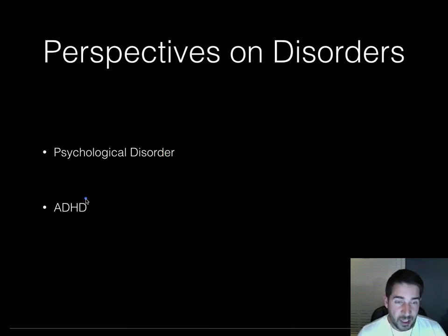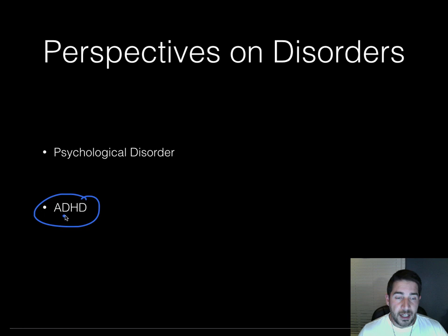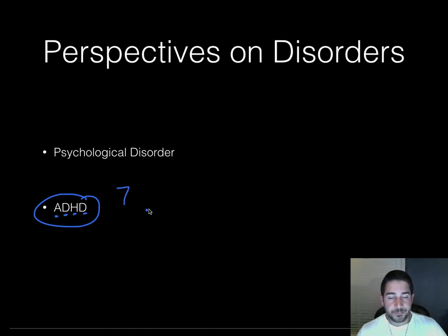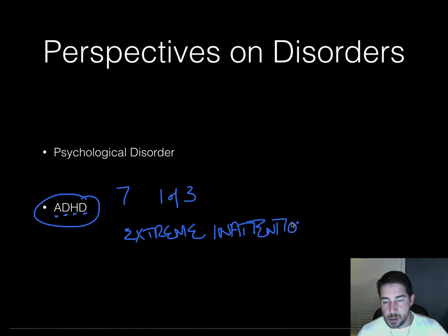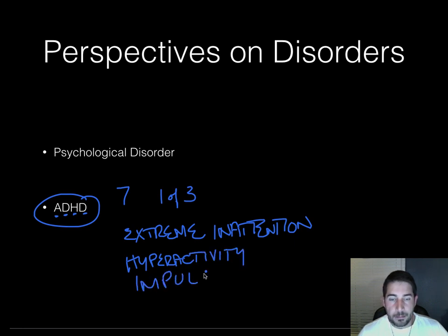Moving on to a particular type of psychological disorder that we've all probably heard about: ADHD, attention deficit hyperactivity disorder. This occurs if it appears by the age of seven, and you have to have one of three symptoms: extreme inattention, hyperactivity, or impulsivity. You just have to have one of these three things to be classified as ADHD.